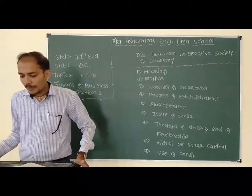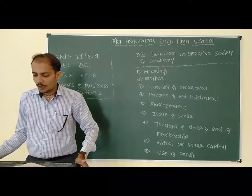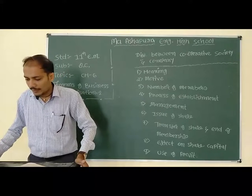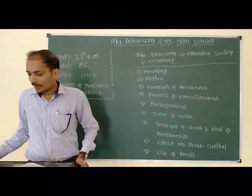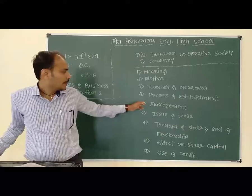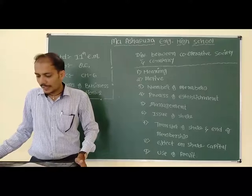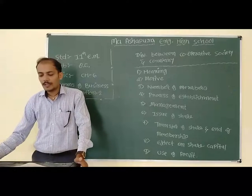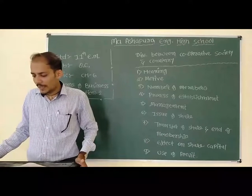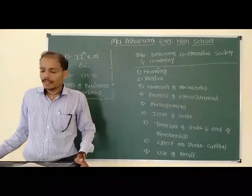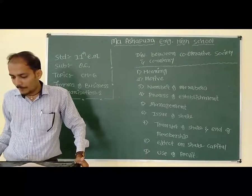Point number 2: motive. Main motive of cooperative society is service — economic development and upliftment of members. The motive of profit is subsidiary. Point number 3: number of members. In a cooperative society minimum 10 members hote hai and maximum no restriction — unlimited ho sakte hai. Company ke andar minimum 7 members and maximum as many in a public company; minimum 2 and maximum 200 in a private company.